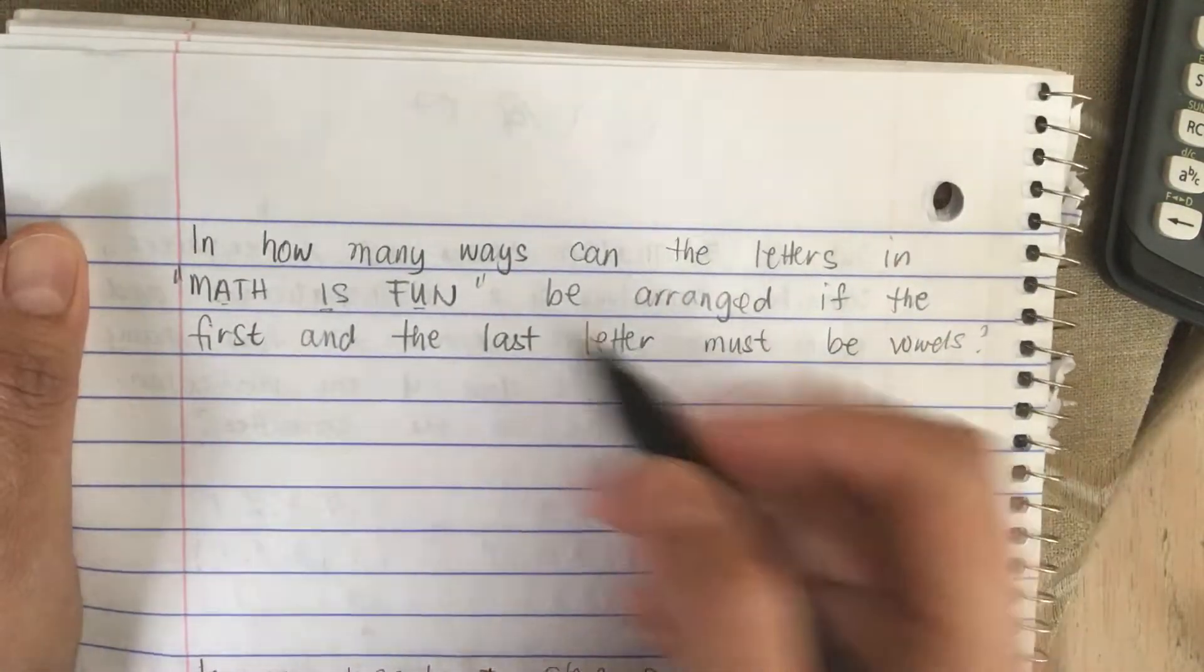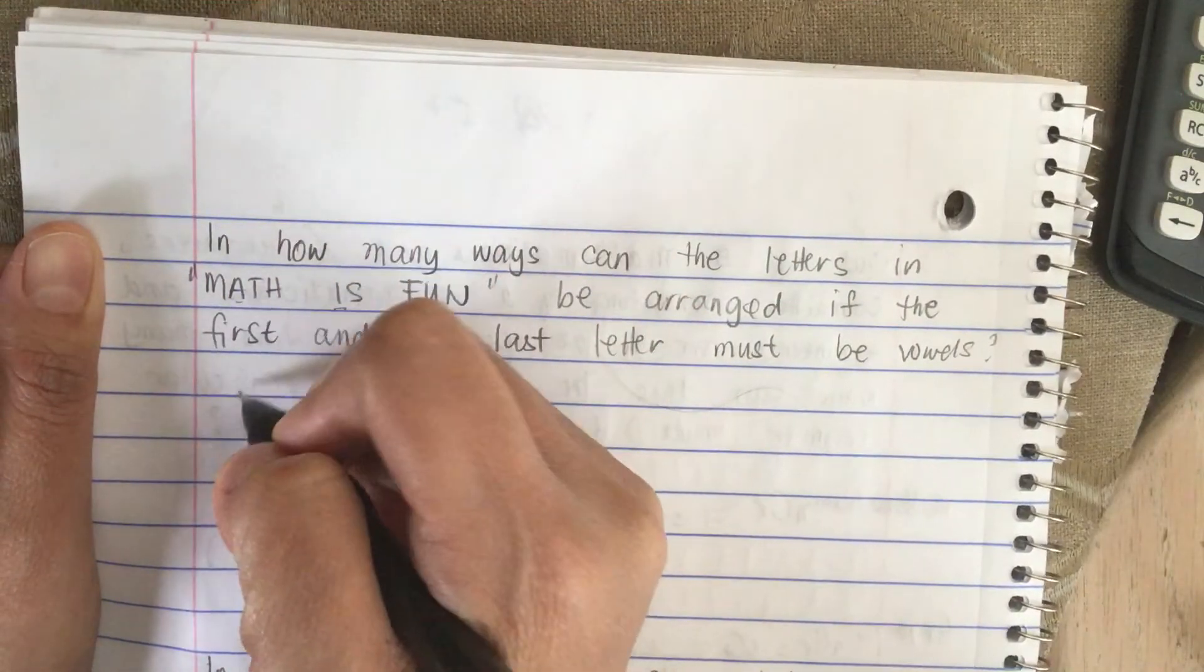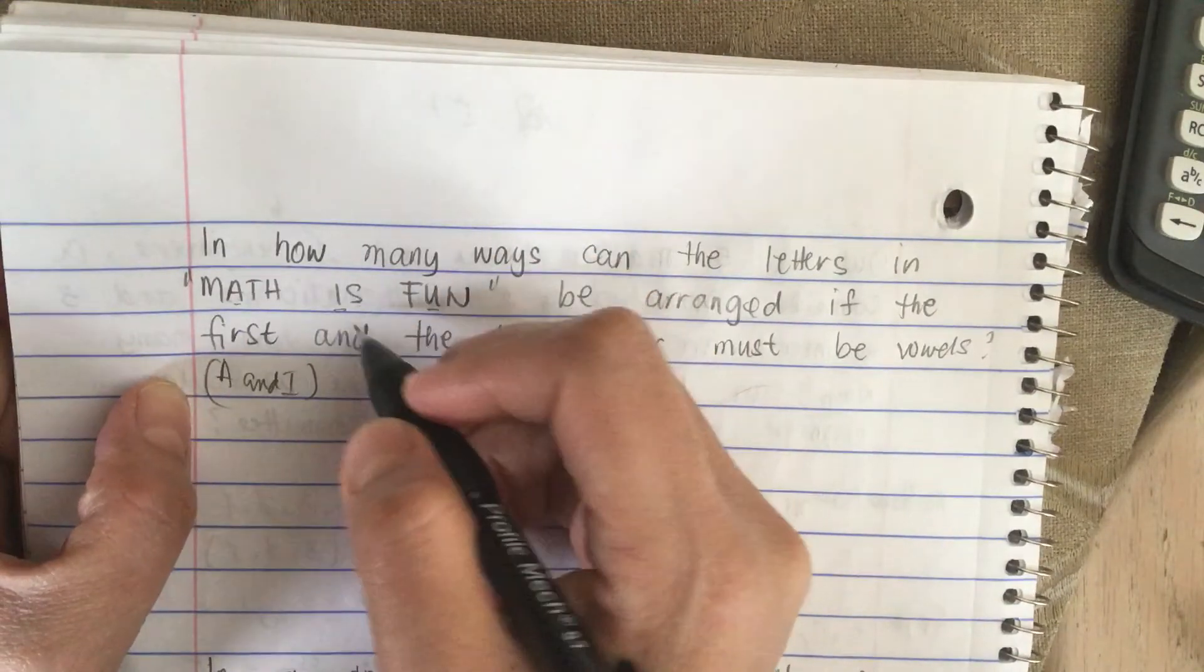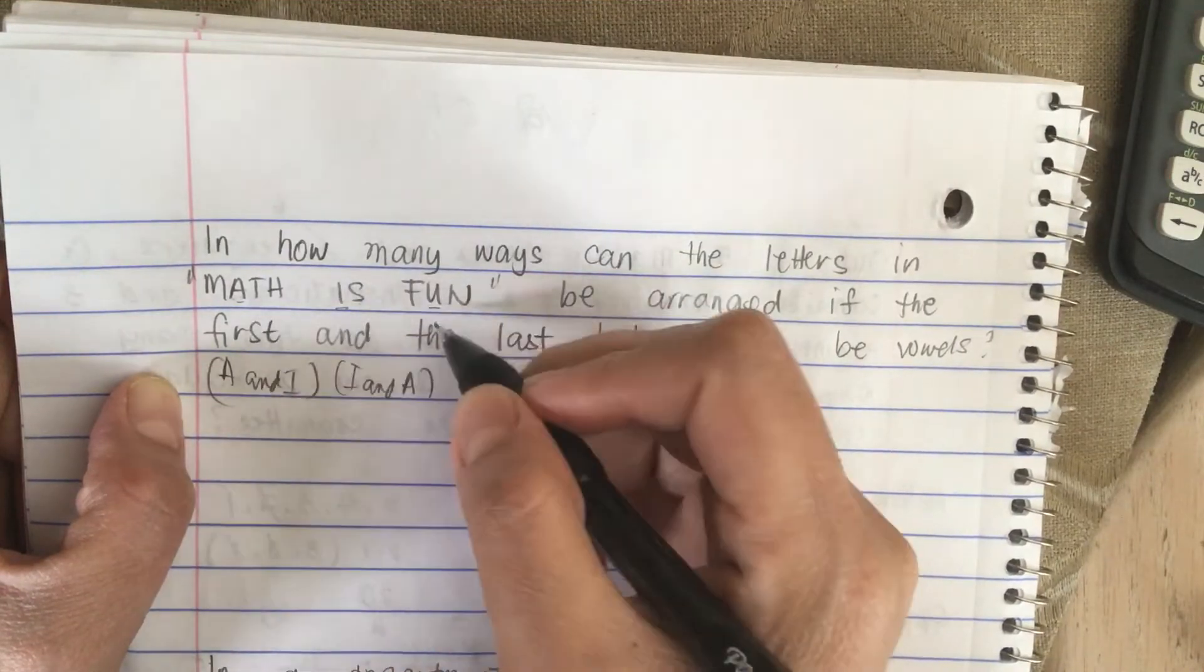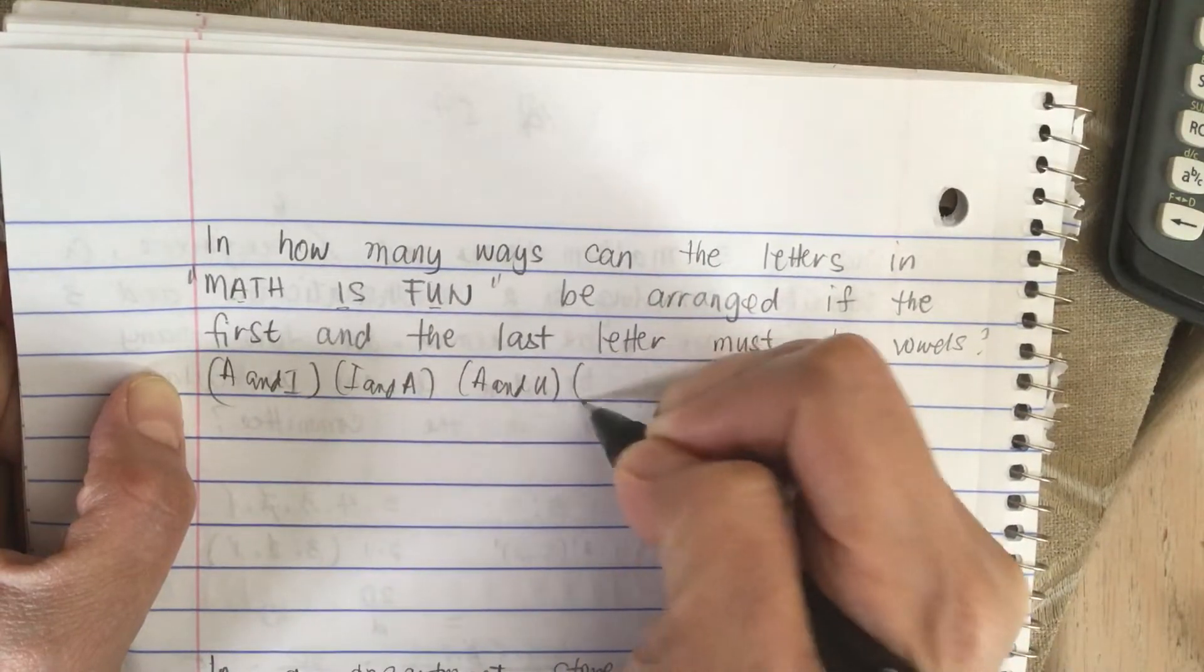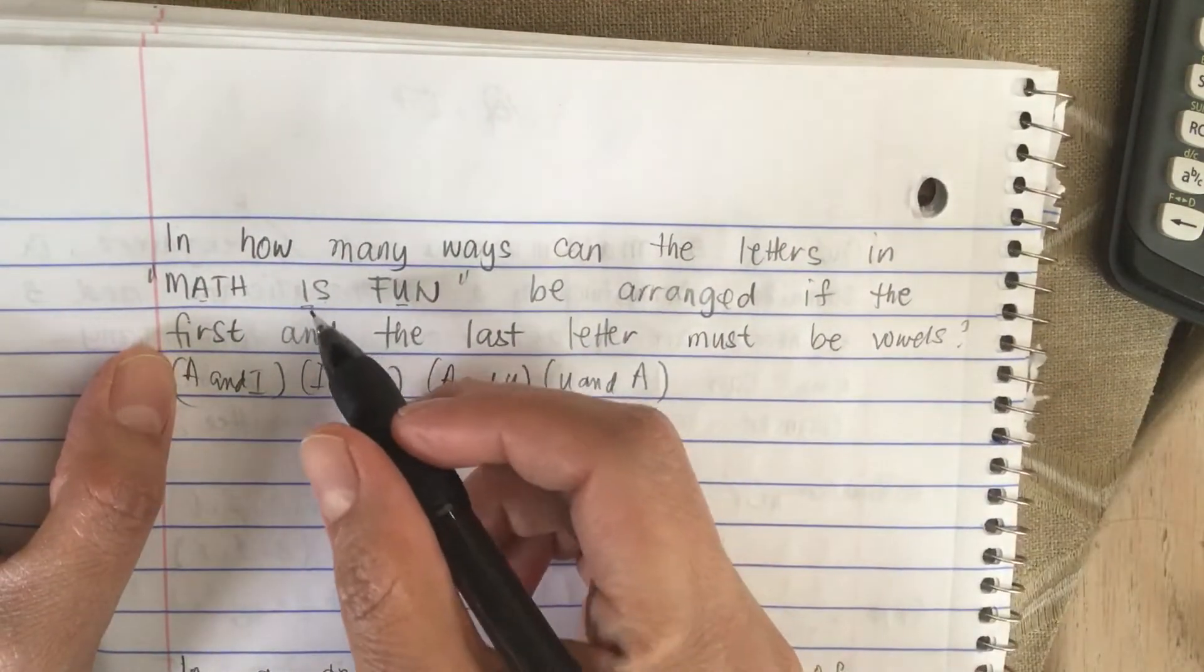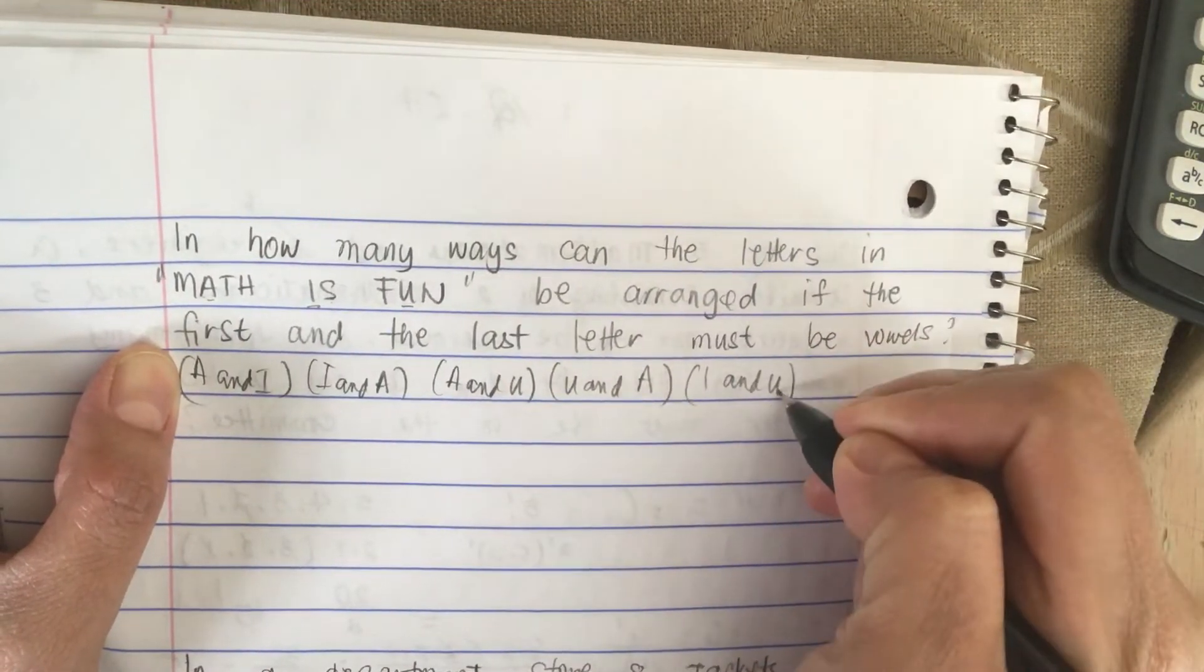So the first and the last can be A and I, and then I and A, and then A and U, and then U and A. And then we have I and U, and then U and I.